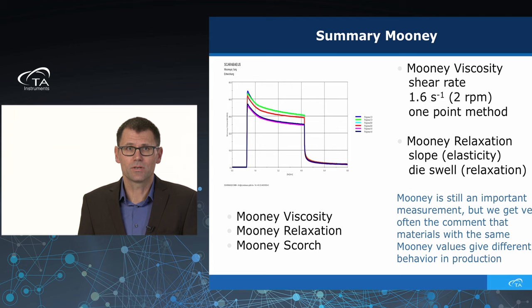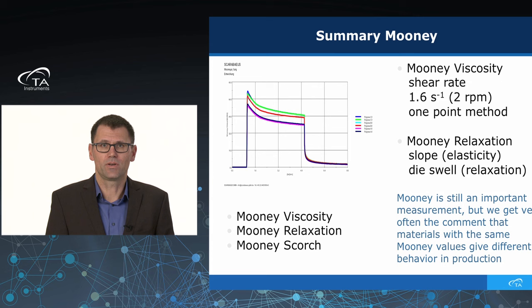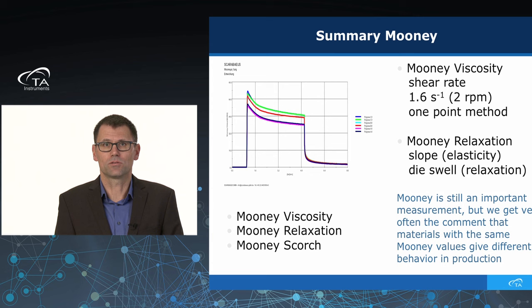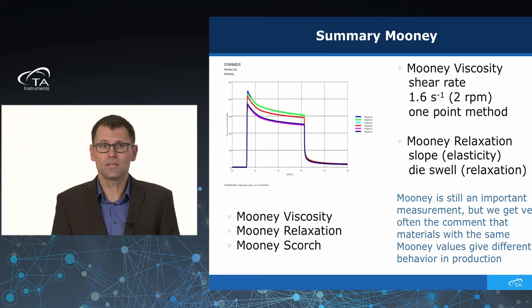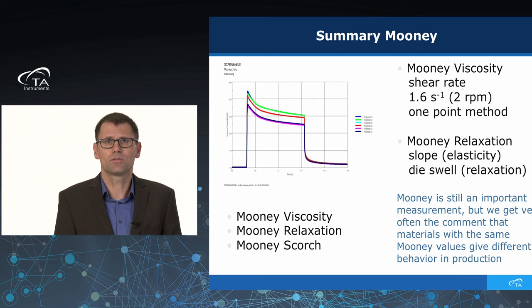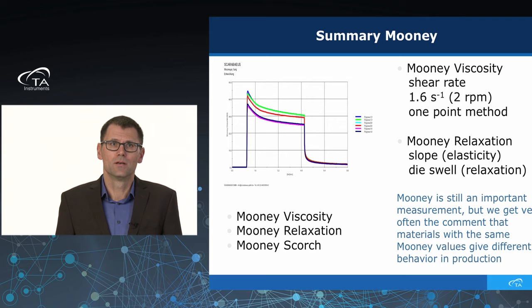A short summary on the Mooney viscosity: it is a worldwide standard and very well known, but it is measured at only one shear rate — 1.6 s⁻¹, at 2 RPM. It is a one-point method. Mooney relaxation is very important because it gives information about elasticity and can provide more data, for example, for die swell. Very often, customers come to us asking for more information because they have the same Mooney value but still have problems in production with different polymers or compounds.